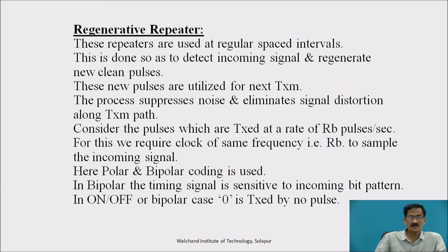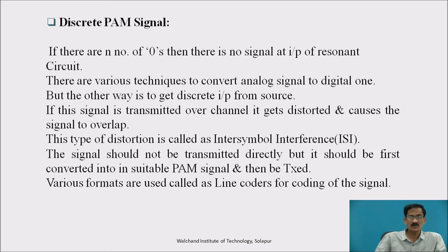Regenerative Repeaters are used at regularly spaced intervals to detect the incoming signal and regenerate new clean pulses. These new pulses are used for the next transmission. The process suppresses noise and eliminates signal distortion along the transmission path. Pulses are transmitted at a rate of RB pulses per second, requiring a clock of the same frequency RB to sample the incoming signal. Polar and bipolar coding are used; in bipolar, the timing signal is sensitive to the incoming bit pattern, and zero is transmitted by no pulse.